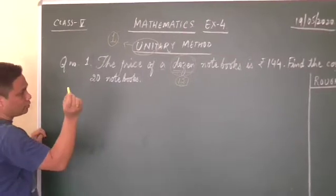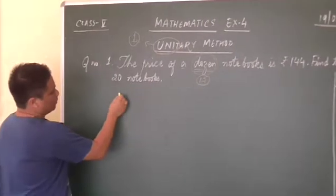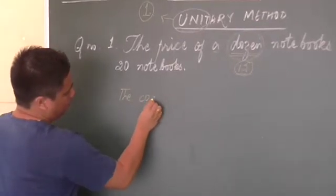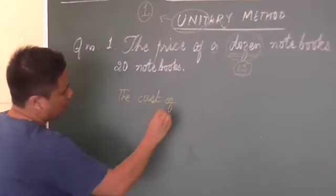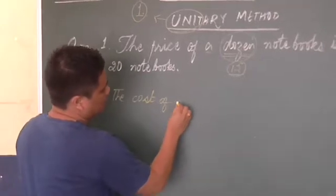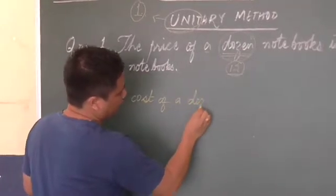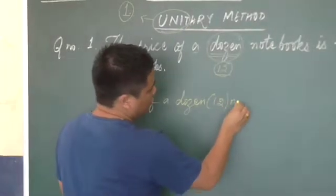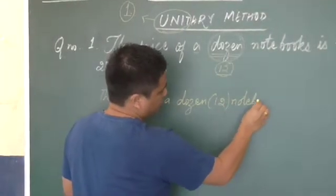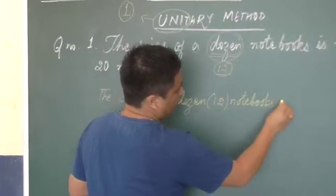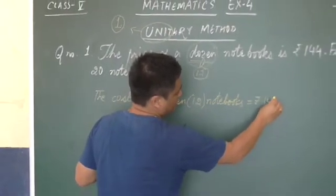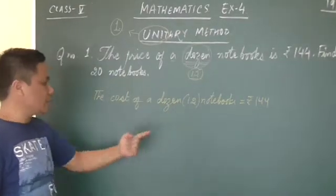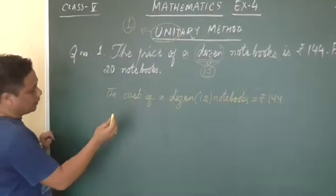First step, what you need to write is the cost of a dozen, that means 12 notebooks is equal to rupees 144. This is the first line you always have to write.